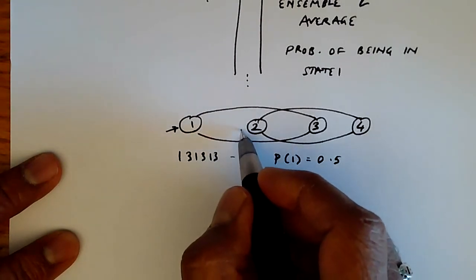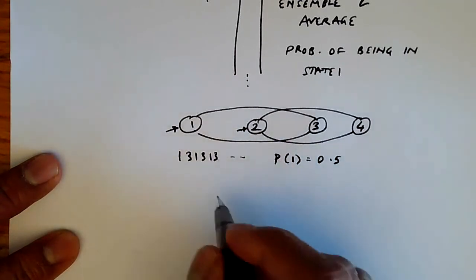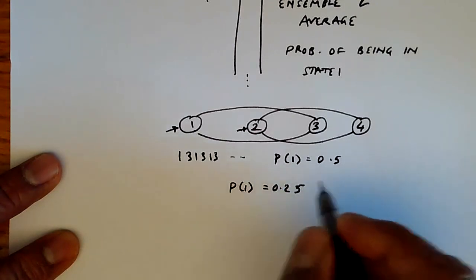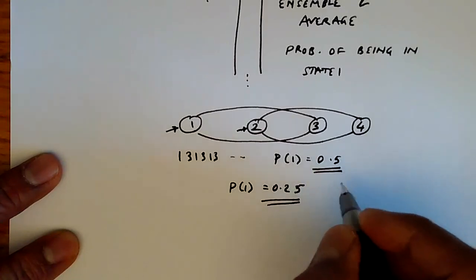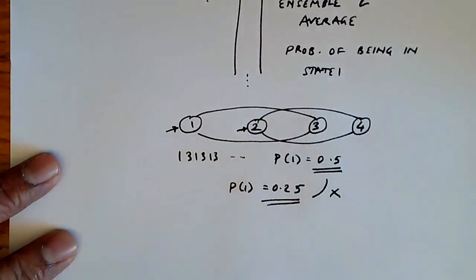But for those chains that start with here, the probability of being in state one will be 0. So the overall probability of being in state one is going to be 0.25. So the ensemble average is 0.25, and the time average is 0.5, and these don't match. So this is a non-ergodic Markov chain.